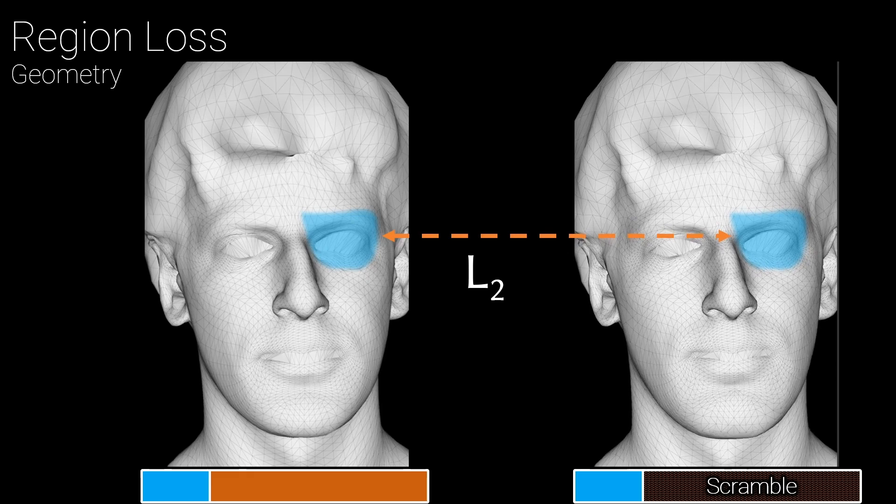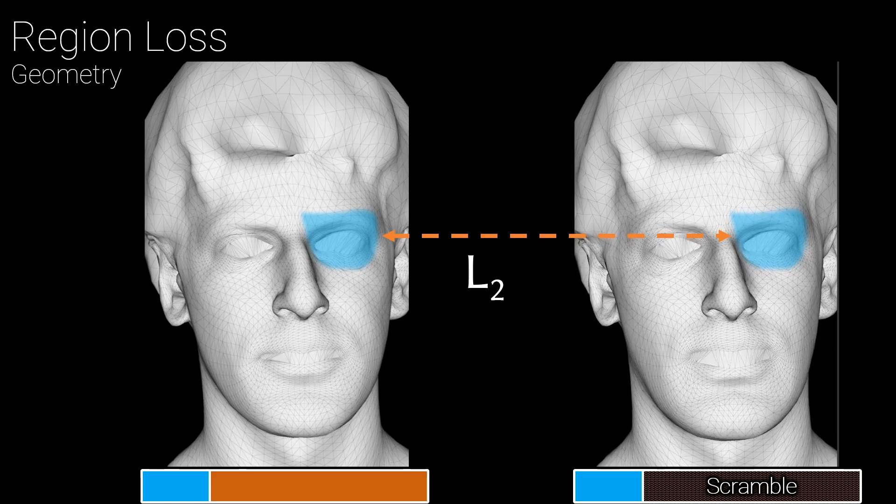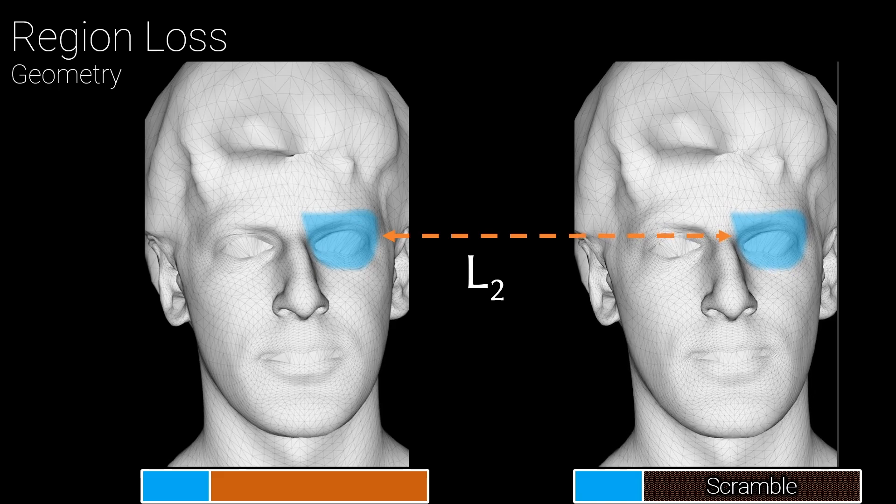Since our model produces both geometry and texture, we apply a similar penalty to the texture, such that when you change the code controlling anything other than the left eye, the left eye texture should not change.